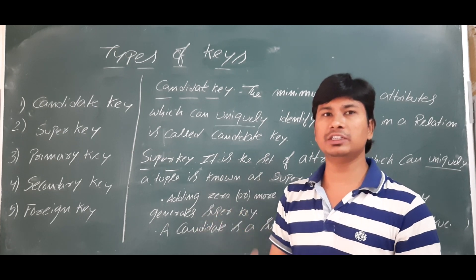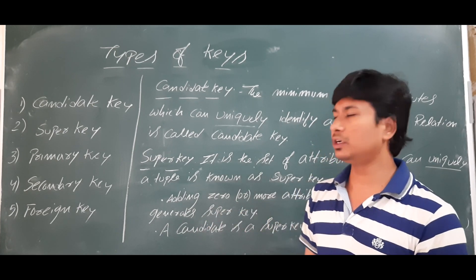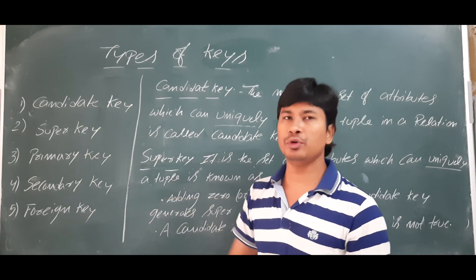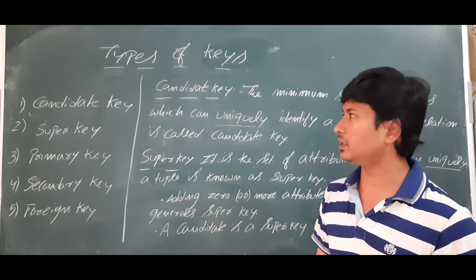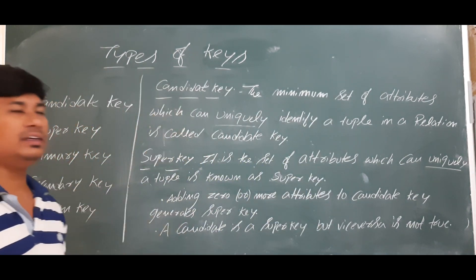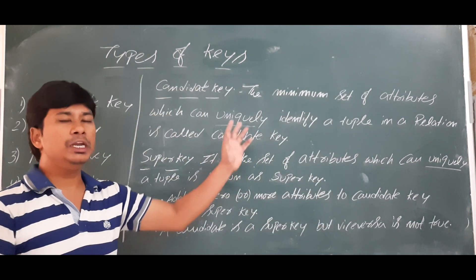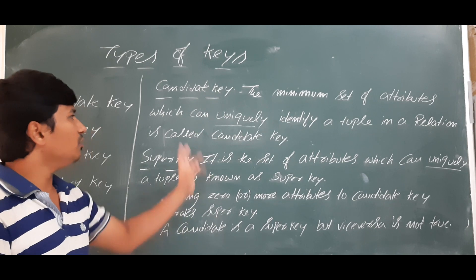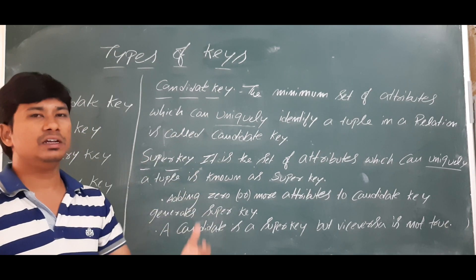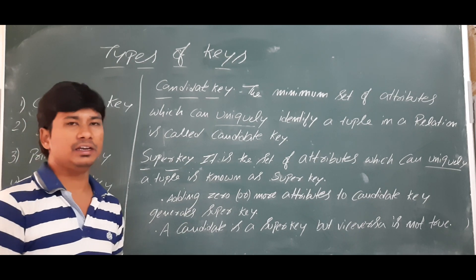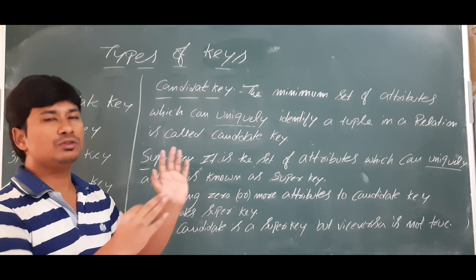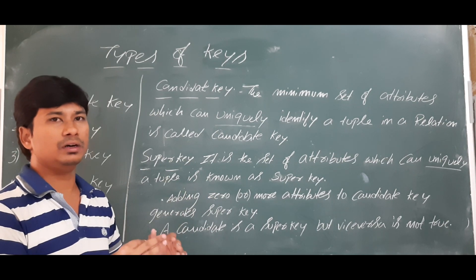In this video I will elaborate more about the candidate key and super key. The candidate key is the minimum number of attributes which can uniquely identify a tuple in a relation. The candidate key is useful to identify a tuple in a relation R.